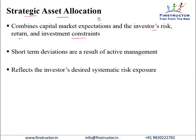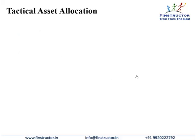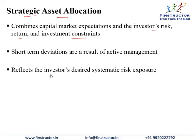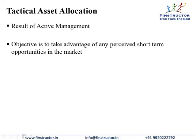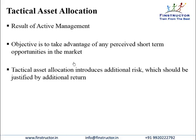The strategic asset allocation reflects the investor's desired systematic risk exposure — from his risk tolerance and return requirements, how much should be allocated to bonds, equities, and other asset classes. Tactical asset allocation is a result of active management wherein the objective is to take advantage of perceived short-term opportunities or mispricings in the market. If we feel equities or bonds are undervalued, we may tilt from our long-term targets by a small amount to capture and profit from these opportunities. Tactical asset allocation introduces additional risk and hence must be justified by additional return.